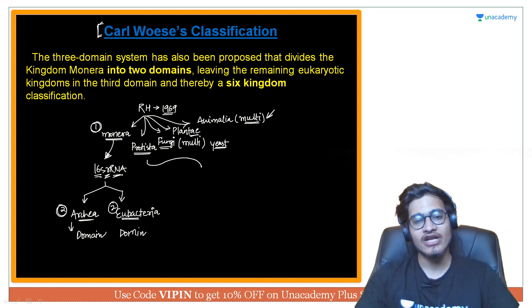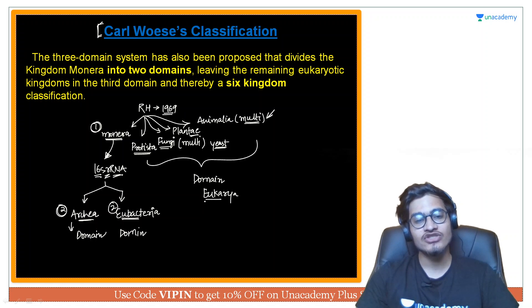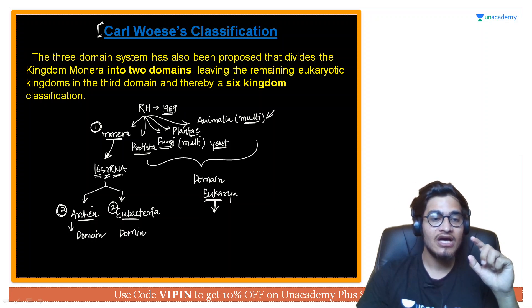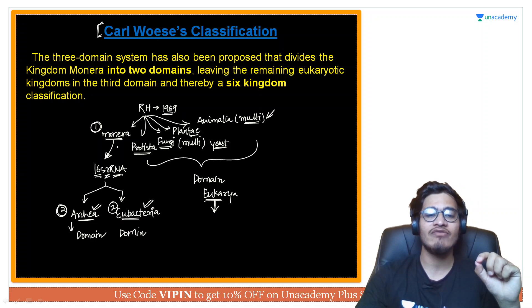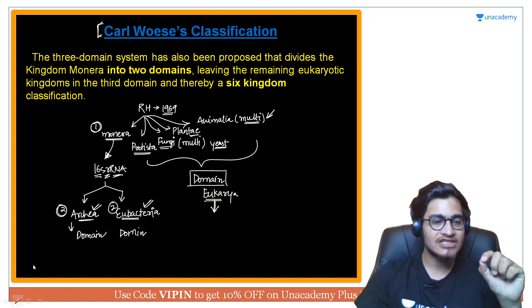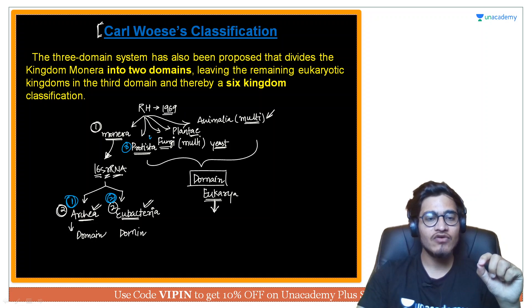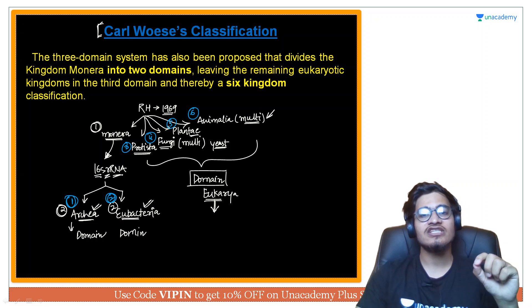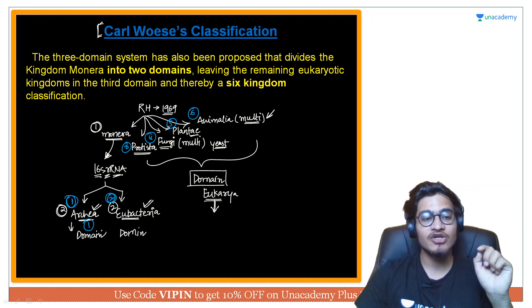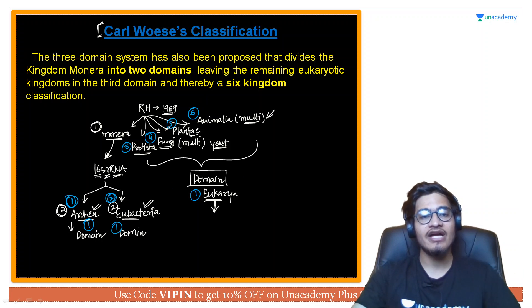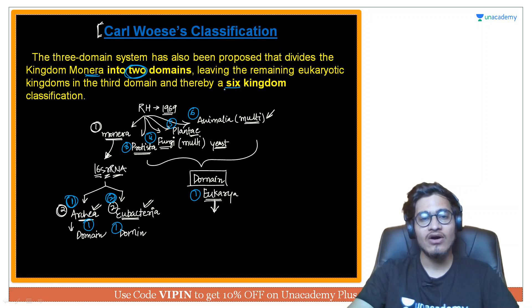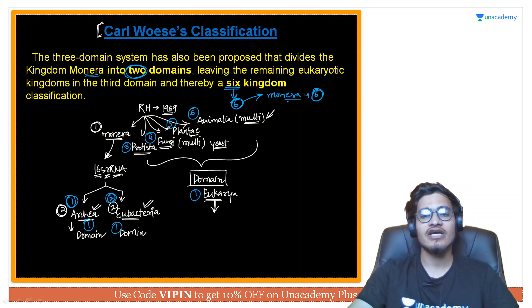Bache huye sare ke sare eukaryotes ko single domain mein rakha gaya, and that domain's name was Eukarya — simply meaning eukaryotes, us word se liya gaya hai. So yahan par Monera ko bifurcate karke Archaea aur Eubacteria banaye, aur bache hue organisms ek domain Eukarya mein. Agar aap kingdoms ginein: first Archaea, second Eubacteria, third Protista, fourth Fungi, fifth Plantae, sixth Animalia — this is the six kingdom classification. If you count domains: domain Archaea, domain Eubacteria, and domain Eukarya — that's why it is called the three domain system of classification.